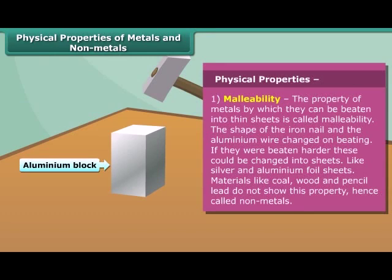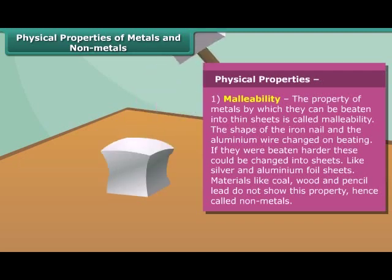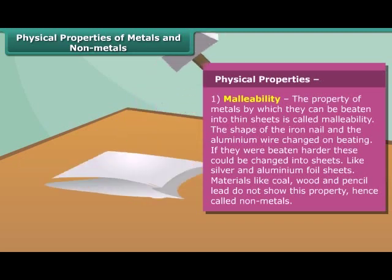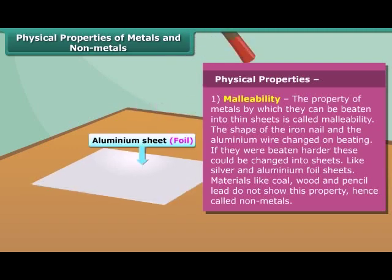The first property of metal is its malleability. By this property, the metals can be beaten into thin sheets. Non-metals don't show this property.